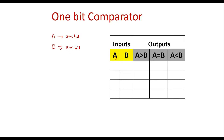When a is one bit, it may be zero or it may be one. Similarly, b may be zero or b may be one. If you consider a and b, the possible inputs are: a=0 b=0, a=0 b=1, a=1 b=0, or a=1 b=1. These are the possible inputs with two bits.